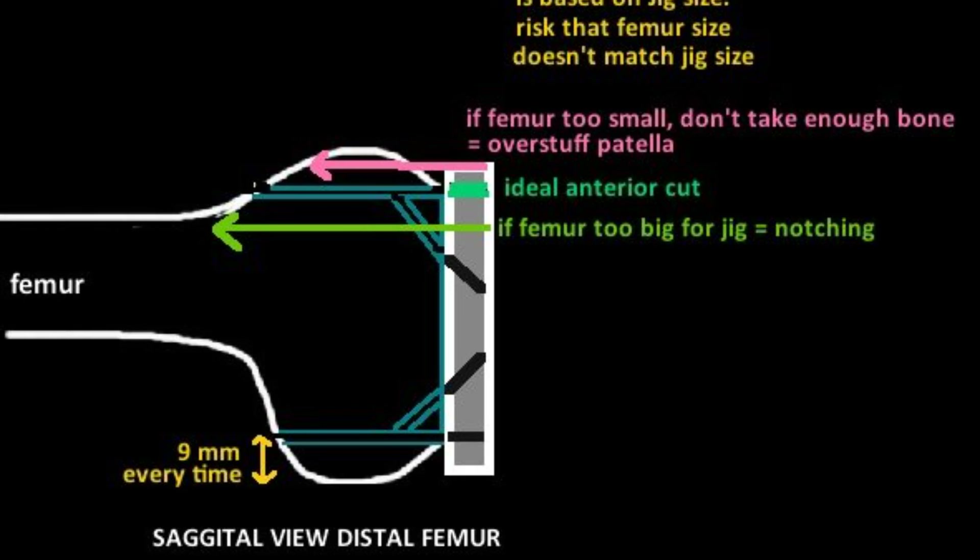The thickness of the anterior cortex is variable with posterior referencing. If incorrectly sized and the femoral component is chosen too big, the anterior cut is too shallow — not enough bone is taken — and it is replaced with too much metal, overstuffing the patellofemoral joint. This makes the patellofemoral joint too tight in flexion, causing knee stiffness. If the femoral component is chosen too small, the anterior cut is too deep, causing notching and potentially increasing the risk of periprosthetic fracture.